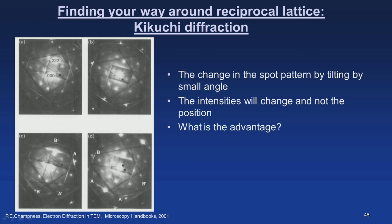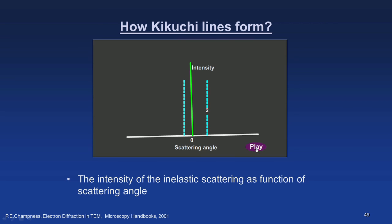The bright line moves further from the 222 spot on one side, and on the other the excess intense line is on the opposite side to the 222 spot. These two conditions belong to positive S and negative S — positive deviation and negative deviation from the Bragg condition. This is what Kikuchi line diffraction clearly demonstrates regarding the deviation parameter.